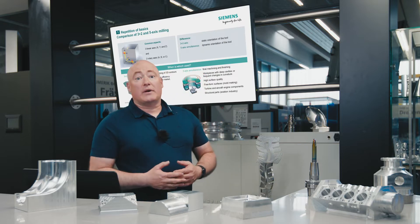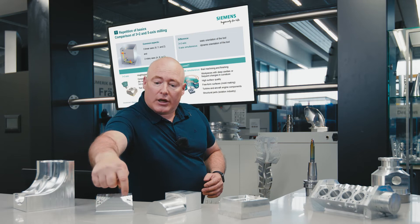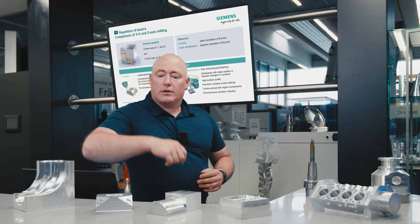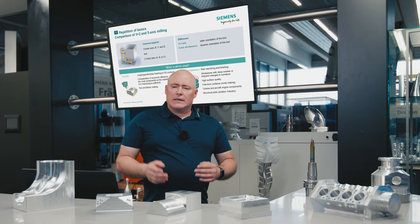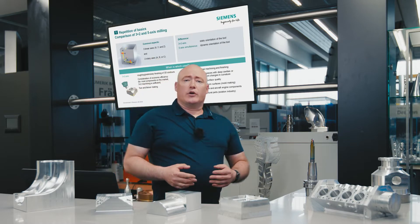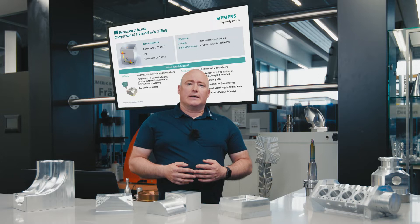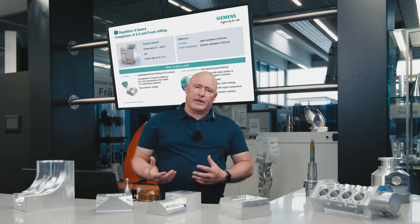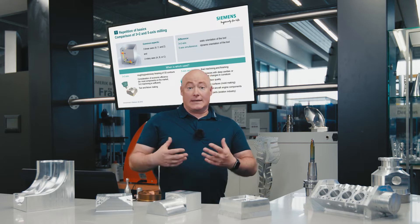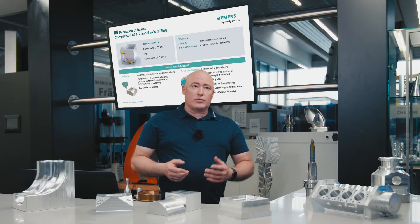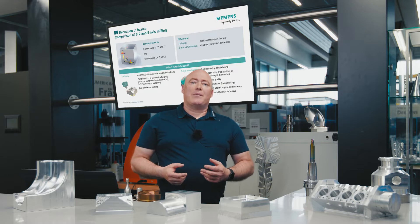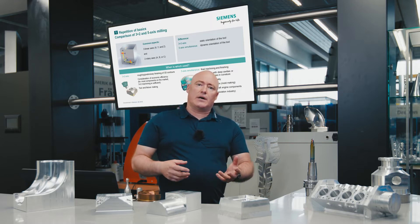So when is which used? 3+2 axis machining is mainly used for roughing and preliminary finishing of 3D contours. Here you can see the static orientation of the tool while machining oblique lines. For parts of this type, the focus is on economic efficiency. Most parts and components can be produced with 3+2 axes. For more information, see our video, Multi-Face Machining Milling 3+2 Axes, in which this topic has been dealt with in detail.